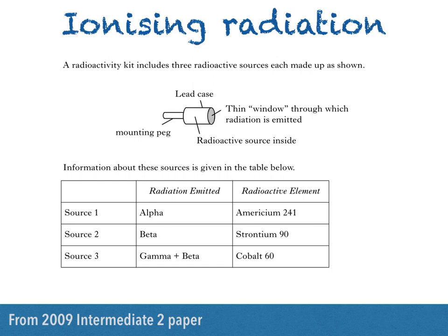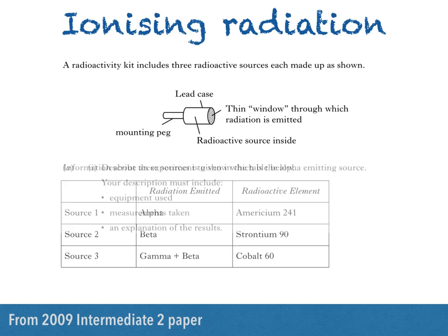A radioactivity kit includes three radioactive sources, each made up as shown. We can see the radioactive source inside a lead case with a mounting peg attached and a thin window through which radiation is emitted. Information about these sources is given in the table below. For the three sources, we're told the type of radiation emitted and the radioactive element making up the source. We'll come back to the table later, because we don't need it for the first part of the question.